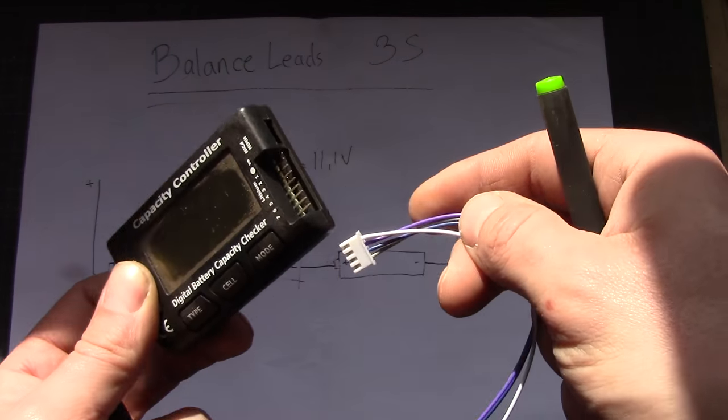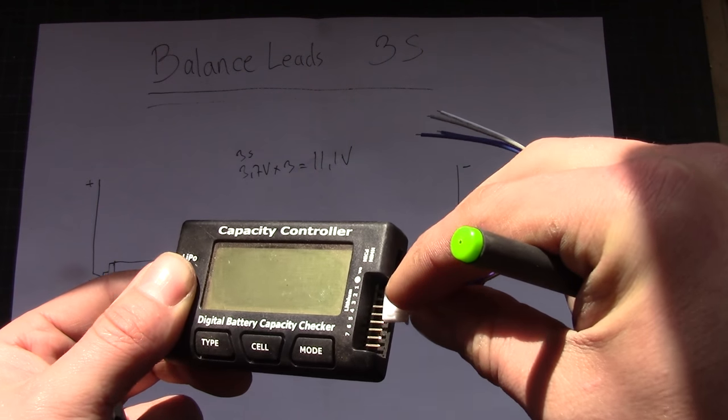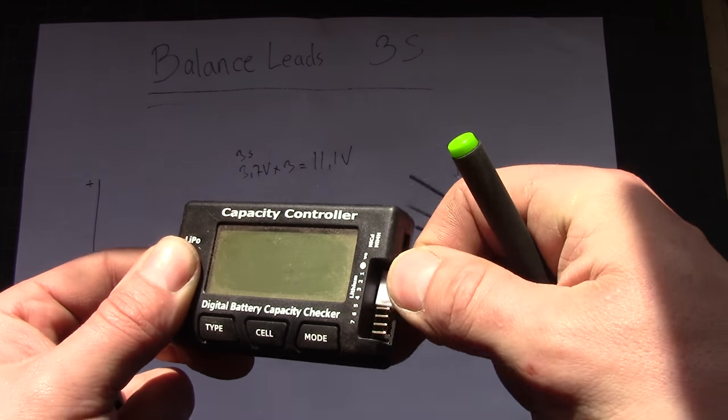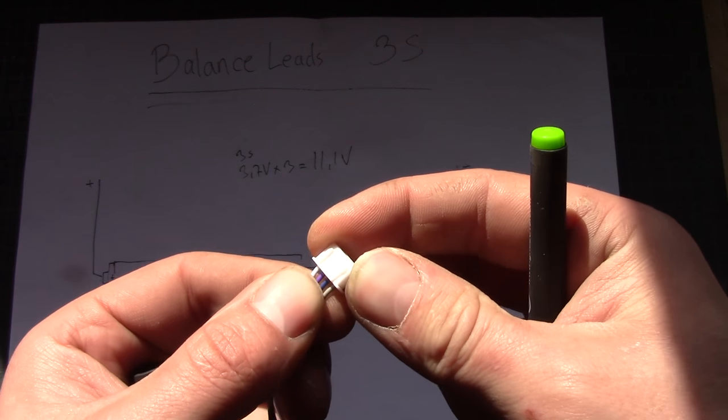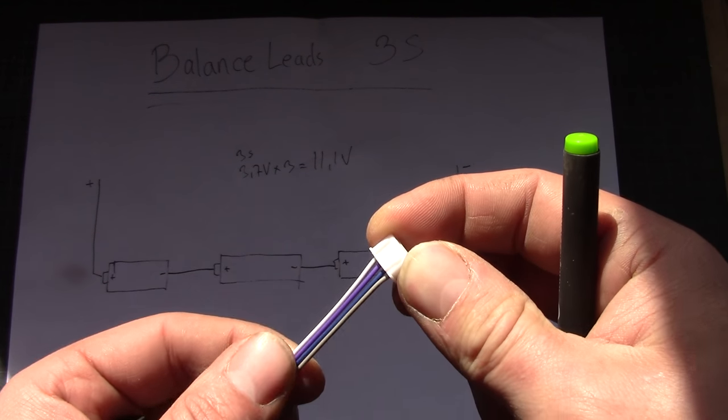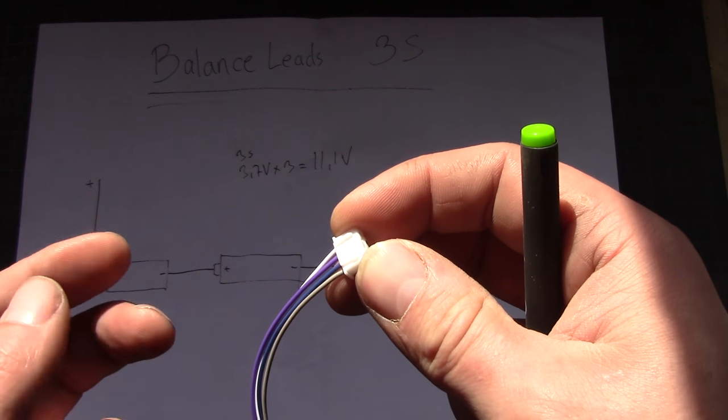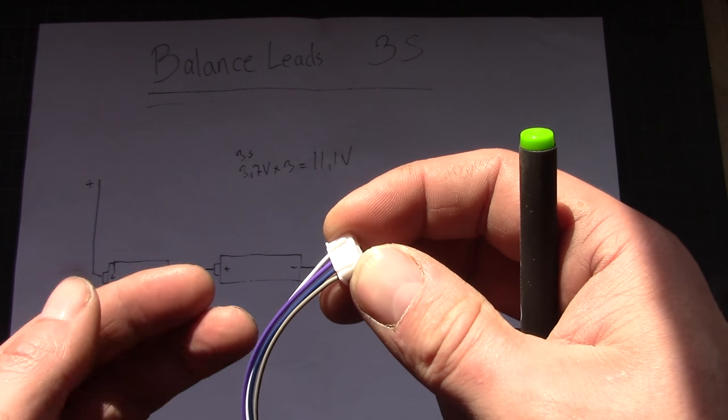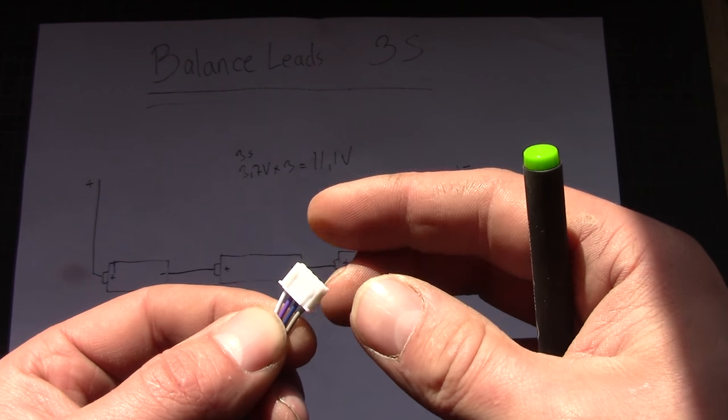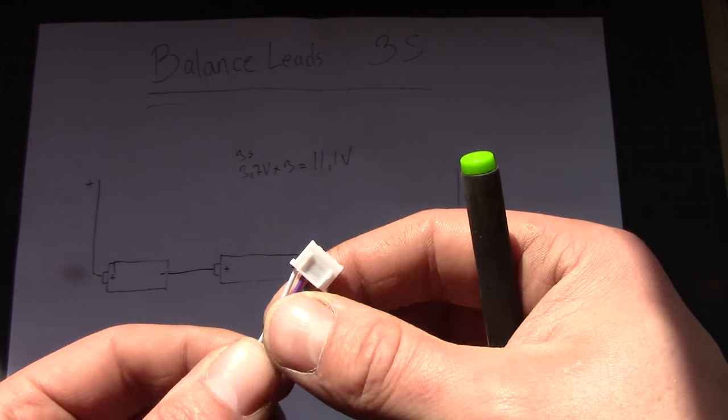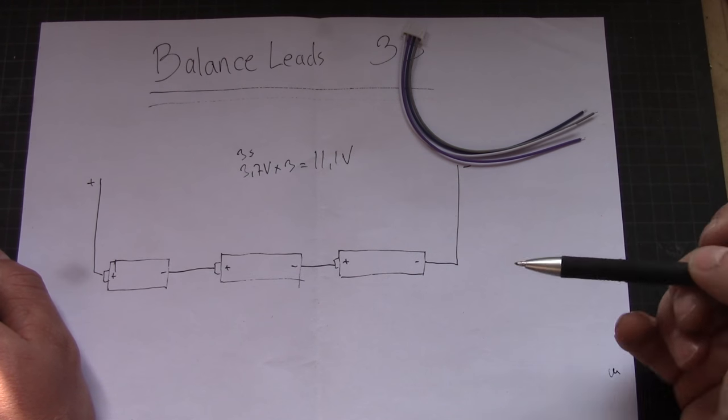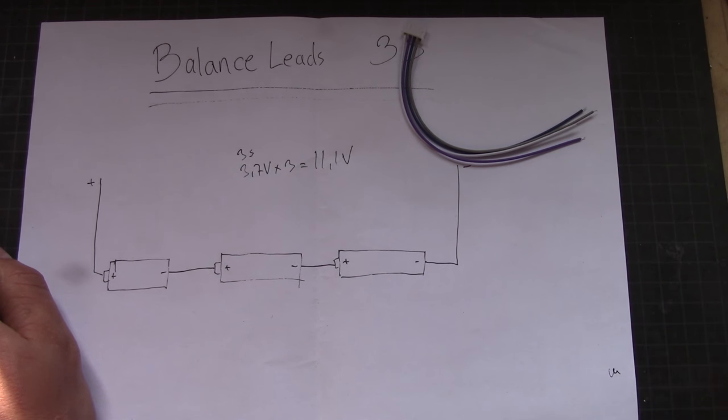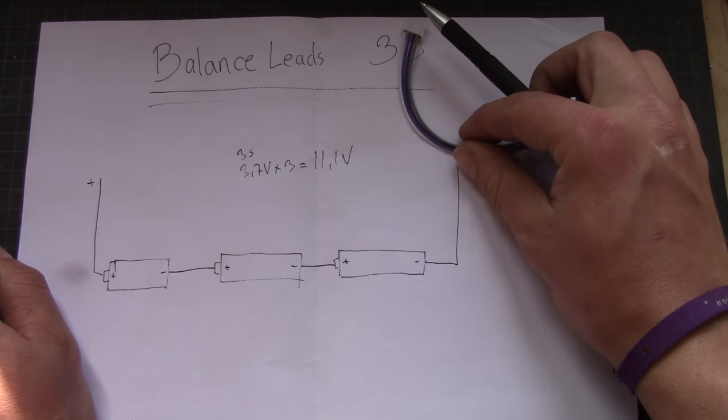This lead will of course fit in here as well, like that. The balance lead in question is a lead that is common for most of the balance chargers out there, including like for instance my iCharger or the BMAX B6, or any of the other ones that you find as well. This is a typical balance contact. We have four leads here.